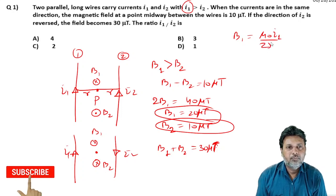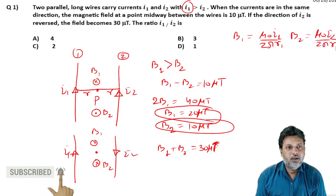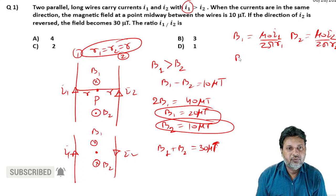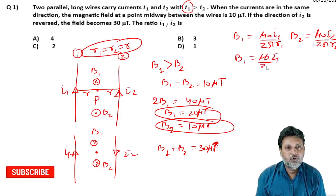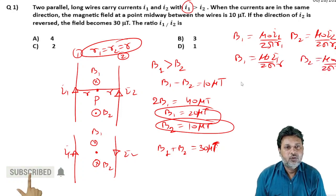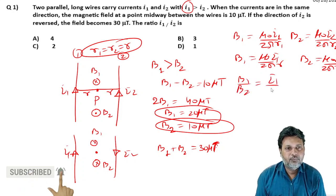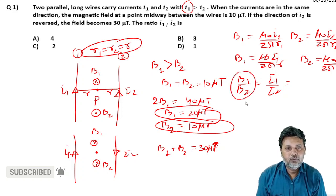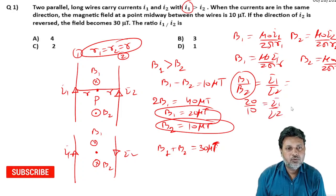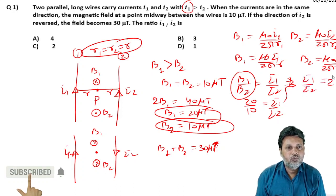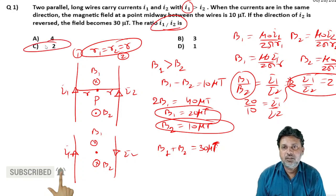Now, B1 equals mu naught I1 upon 2 pi r, and B2 equals mu naught I2 upon 2 pi r. Dividing, B1 upon B2 equals I1 upon I2. Therefore I1 upon I2 equals 20 upon 10, which gives the ratio of I1 to I2.